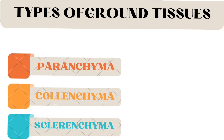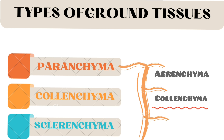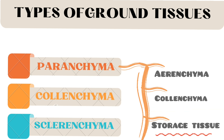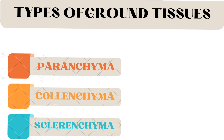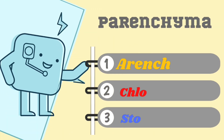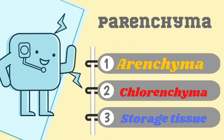Parenchyma is of 3 types: aerenchyma, collenchyma, and storage tissues.